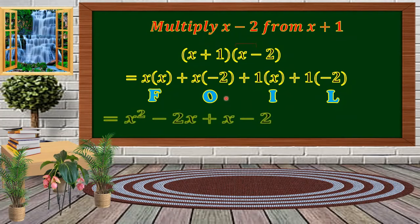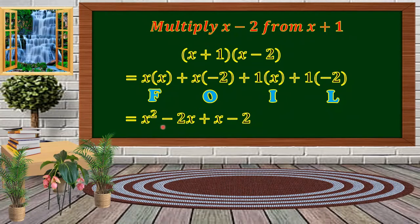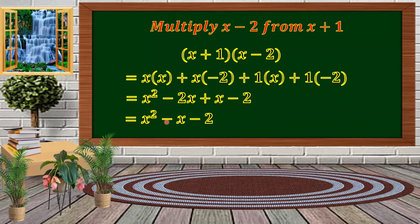Now we simplify. x times x is x squared. Negative times positive is negative, so x times 2 gives us negative 2x. Positive 1 times positive x is positive x. And the last term gives us negative 2. We have similar terms in the middle: negative 2x plus 1x equals negative 1x. So the final product is x squared minus x minus 2.